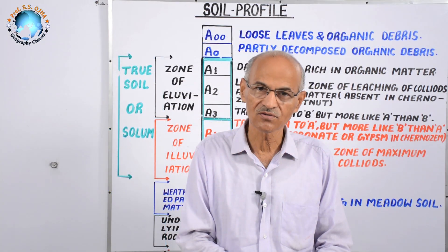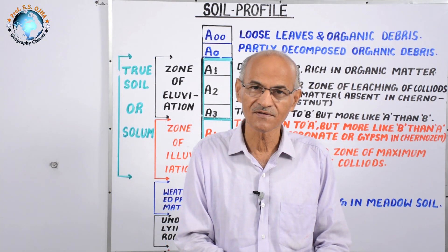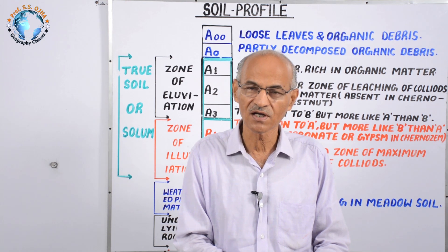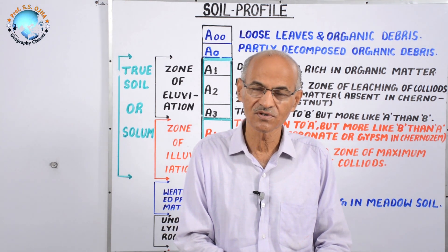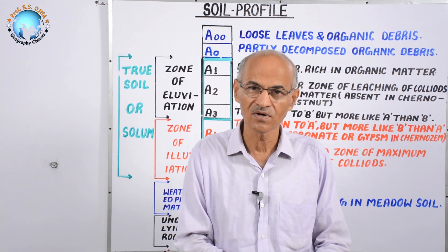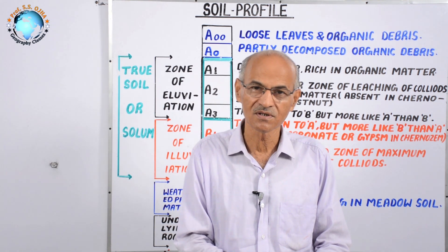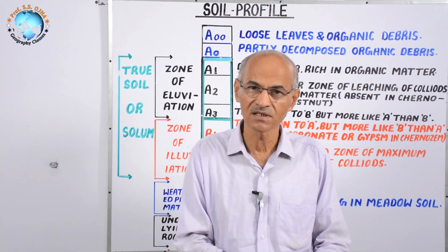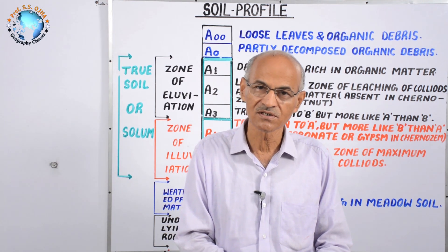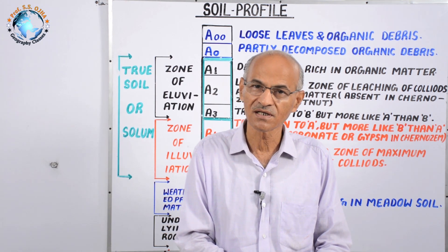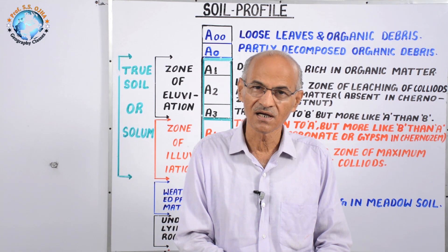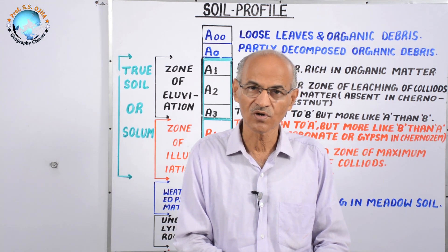In Pedology or Soil Science, after the study of soil genesis, we study its properties and distribution of soil all over the world. Distributions are of two types: horizontal distribution from equator to pole, and vertical distribution. Vertical distribution means with increasing depth the nature and character of soil changes, and this is termed the soil profile.